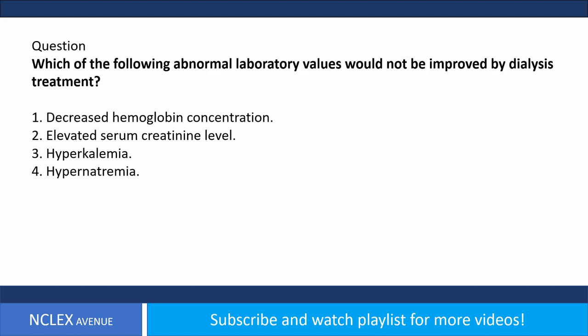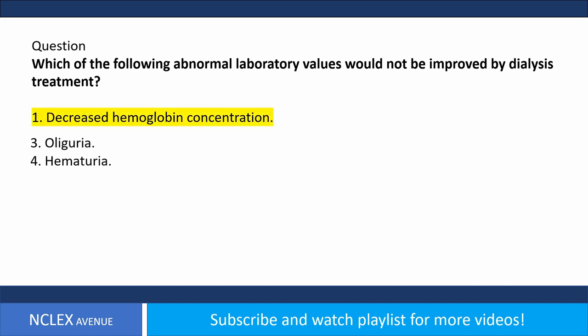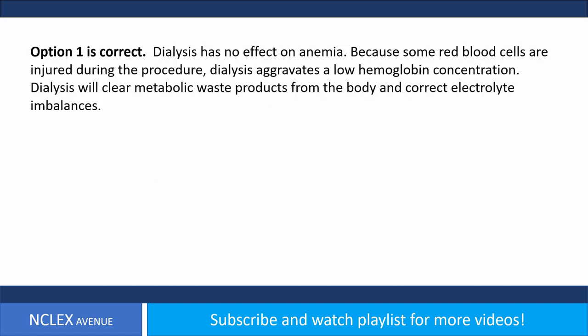Question. Which of the following abnormal laboratory values would not be improved by dialysis treatment? 1. Decreased hemoglobin concentration. 2. Elevated serum creatinine level. 3. Hyperkalemia. 4. Hypernatremia. Answer. Option 1 is correct. Dialysis has no effect on anemia. Because some red blood cells are injured during the procedure, dialysis aggravates a low hemoglobin concentration. Dialysis will clear metabolic waste products and correct electrolyte imbalances.